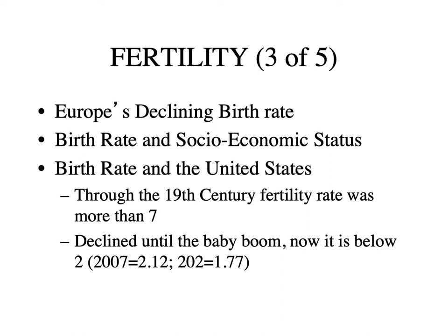This is beginning to happen in the United States as well — a white supremacist view that what defines the United States is whiteness, and that the decline in the white birth rate is a decline in the nation. The U.S. fertility rate was more than seven in the 19th century, declined until the baby boom, and is now below two. In 2007 the birth rate was 2.12 — basically replacement fertility — but in 2020 it was 1.77, meaning fewer and fewer women are having two children.